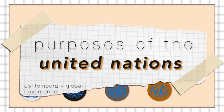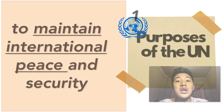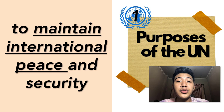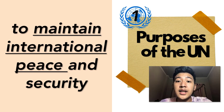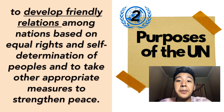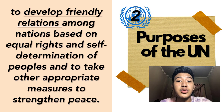The next part is the purposes of the United Nations. Originally there are only four purposes, but we can separate one into two, making it five. The first purpose is to maintain international peace and security. An example was when the United Nations Security Council took action against North Korea's nuclear and missile activities by adopting nine sanctioned resolutions. The second purpose is to develop friendly relations among nations based on equal rights and self-determination, and to take appropriate measures to strengthen peace — for example, through conventions held to strengthen peace among nations.